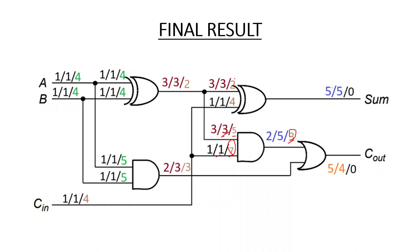For the XOR gate inputs, to observe one input we control the other input to zero. So for the first XOR input: observability = 1 + CC0(other input, which is 0) + 1 = 2. For the second XOR input: observability = 3 + CC0(other input, which is 0) + 1 = 4.